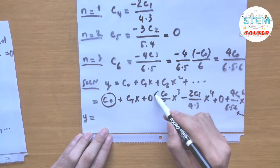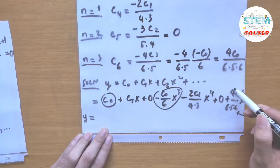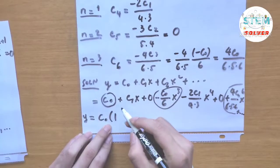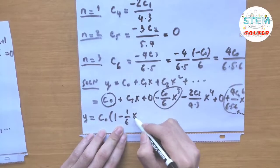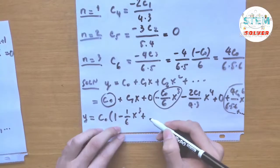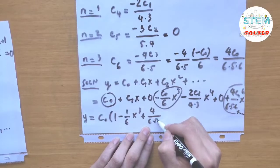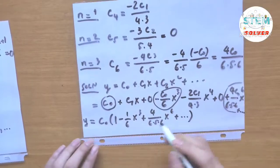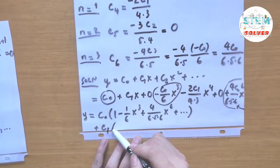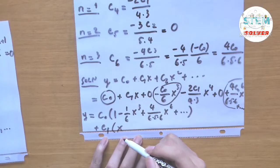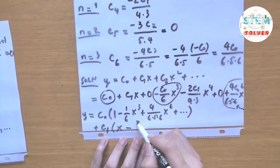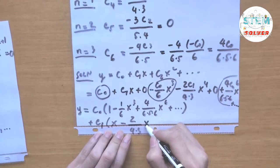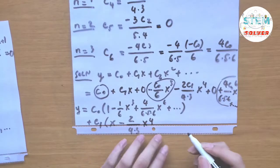Factoring by the arbitrary constants: we factor out c_0 to get 1 minus (1 over 6) x cubed plus (4 over 6 times 5 times 6) x to the 6th plus dot dot dot, and factor out c_1 to get x minus (2 over 4 times 3) x to the 4th plus dot dot dot.